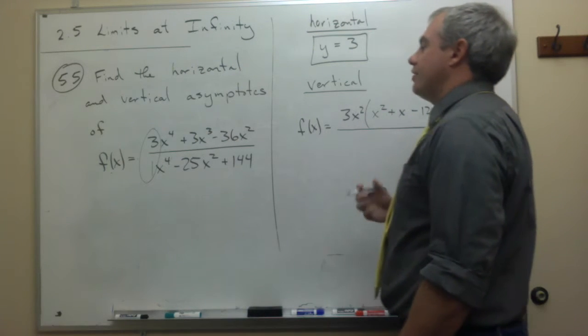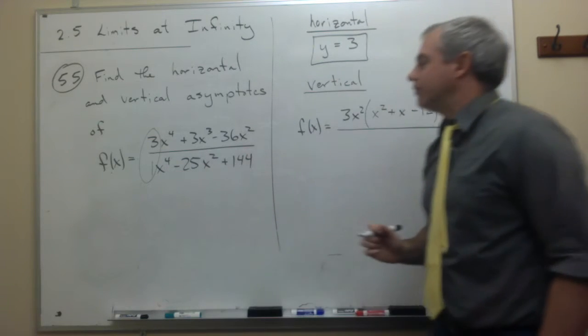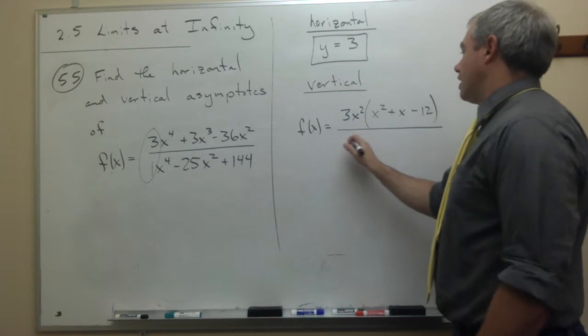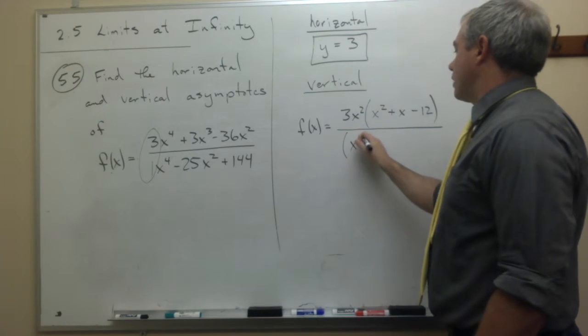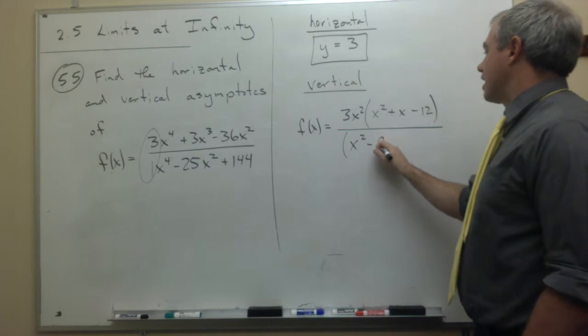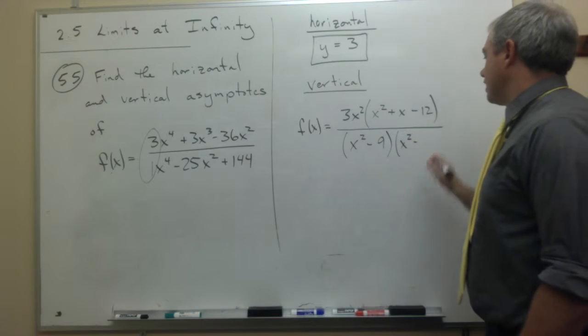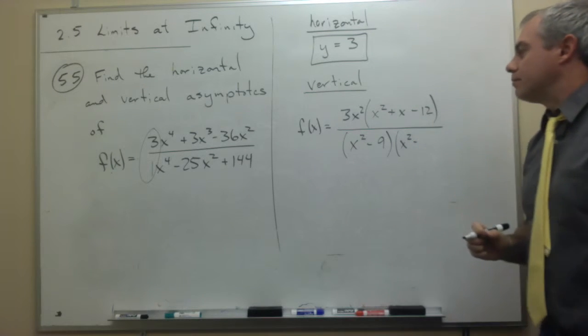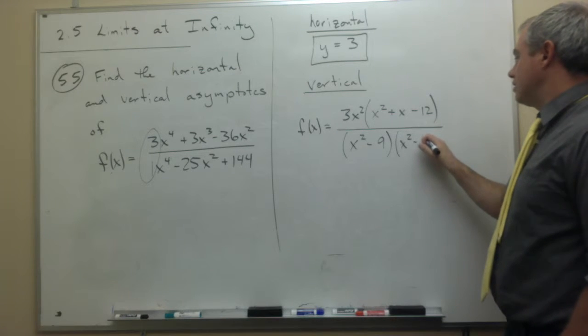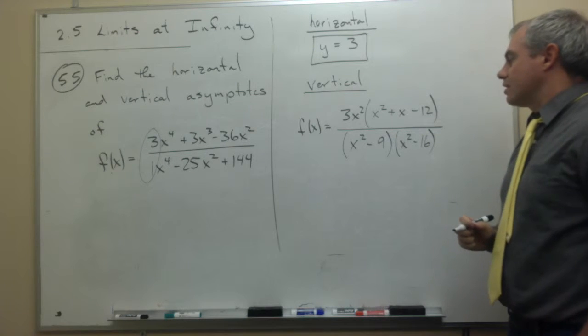On the bottom, there's nothing to pull out, but this is going to factor into two factors of x squared. So I'm going to get an x squared, let's see, I suppose it's going to be minus 9, and an x squared minus, what would it be, 16, yes.